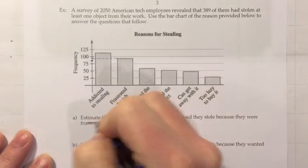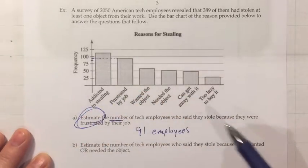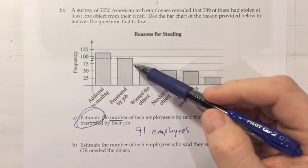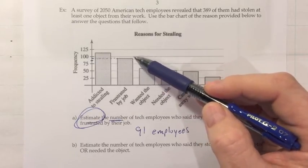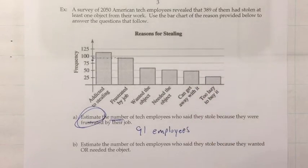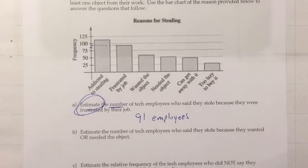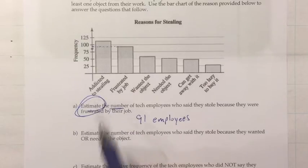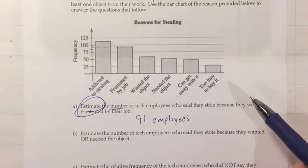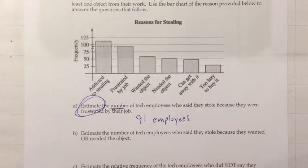That's an estimate — I can't tell the exact height of that bar. It definitely needs to be more than 75 and less than 100, probably closer to 100, but we won't all agree on exact answers. Notice the point of the bar graph: it tells us counts visually, and we can quickly see the most common reason for stealing is apparently being addicted to stealing, while the least common is being too lazy to buy it. That's the main advantage of a bar graph.